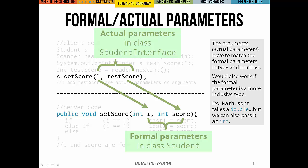As an example, think about the method math.square root. That has a single formal parameter of type double. But we can also pass an int, along with a double, we can pass an int as well as an actual parameter or an argument from the caller, because that's less inclusive than double.